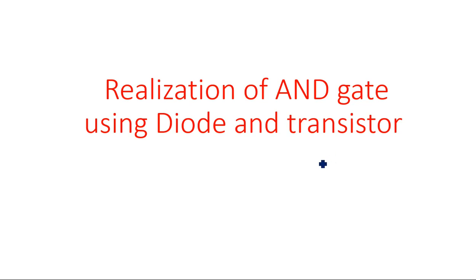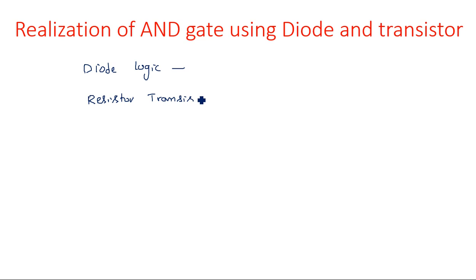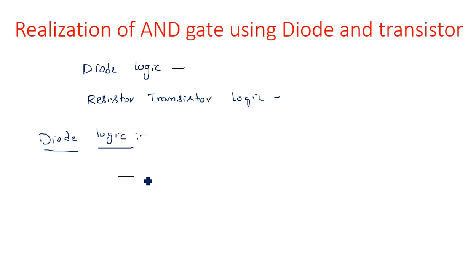In this video, I am going to explain the realization of AND gate using diode logic as well as transistor logic. If you are going to use a diode, then that logic is called diode logic. In the case of AND gate, it is diode logic, or it may be resistor transistor logic.